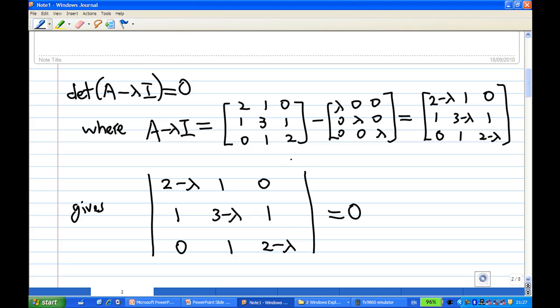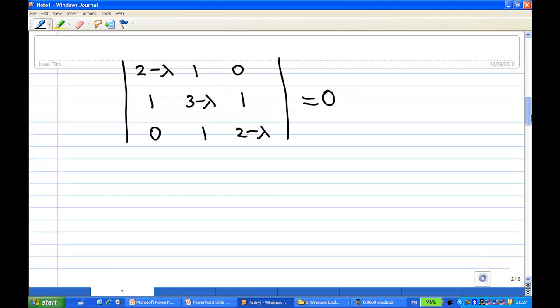So I want this determinant equal to 0. Now to find the λ so that this determinant equals 0, I'm going to use a cofactor expansion. I'm going to take the first row and expand.